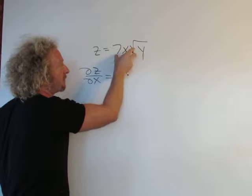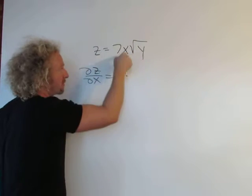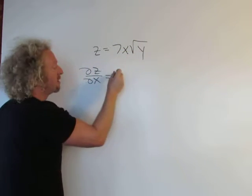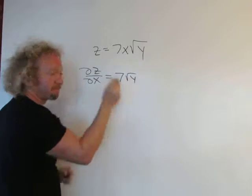The derivative of x is 1, so all of this, the 7 and this guy are both numbers. So take the derivative, that becomes 1, you just get 7 square root of y. That's it.